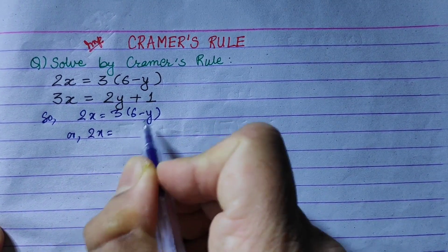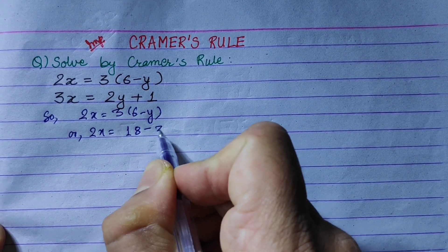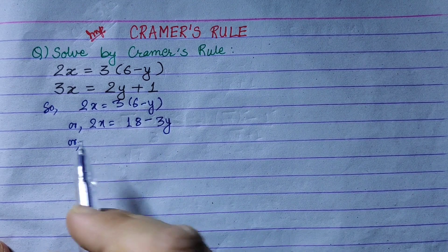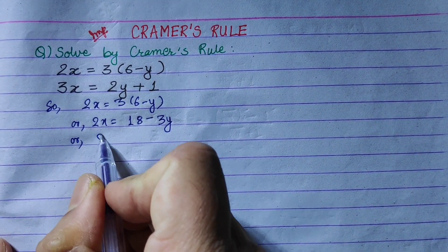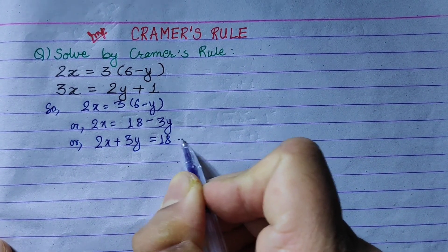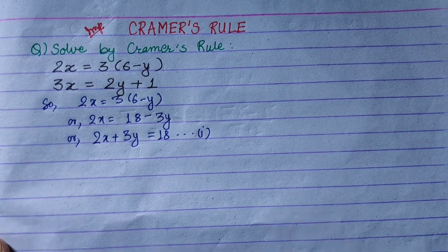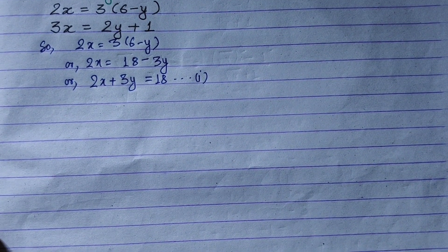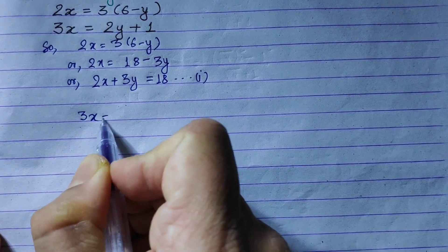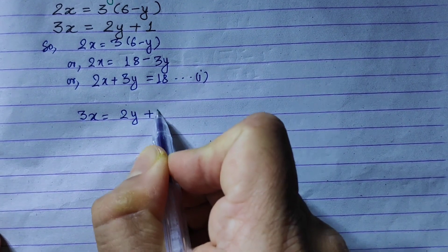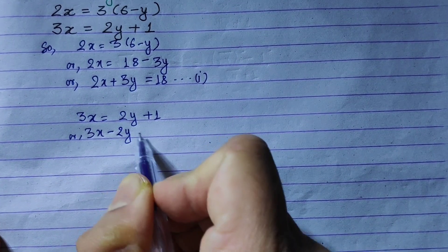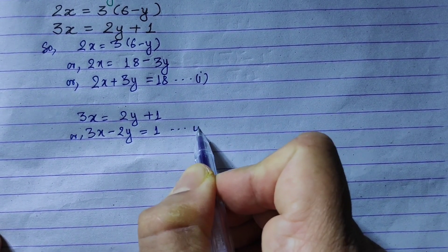2x is equal to 18 minus 3y. Now let's look at the second equation. x or y is equal to 1, so it will be equal to 2y plus 1. Let's simplify this equation: 3x minus 2y is equal to 1. Equation 2.